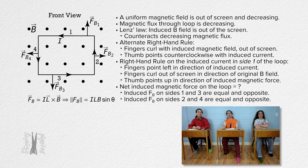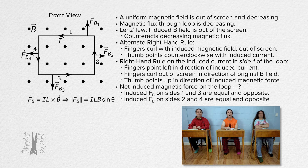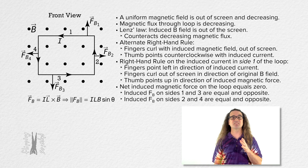The same is true for sides two and four. The current has the same magnitude, the lengths of the wire are the same, the magnetic field has the same magnitude at both locations, and the sine of the angle gives the same value. So the net induced magnetic force for sides two and four is also zero, which means the net induced magnetic force on the entire rectangular loop equals zero. No numbers needed. The net induced magnetic force on this current-carrying loop in a uniform magnetic field is zero.